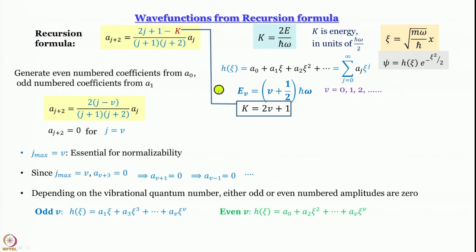This is where we have stopped in the last module. Just to do a quick recap, what we are doing is we are proposing the solution of H of xi - please do not forget where xi comes from, xi is simply root m omega by h-bar multiplied by x. The wave function is H, which is a function of xi, multiplied by e to the power minus xi square by 2. What we are trying to find out is what this H of xi is. For very large values of xi it is a constant, but for all values of xi, we have expressed it as a power series: H of xi is sum over j equal to 0 to infinity, a_j xi to the power j.